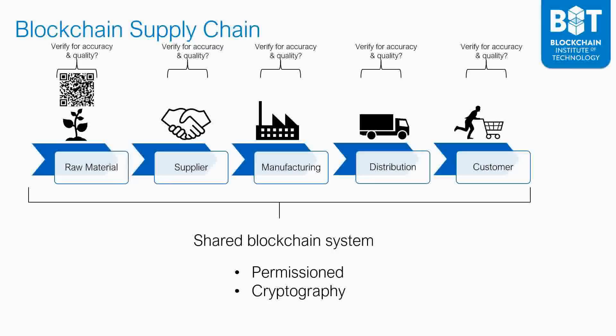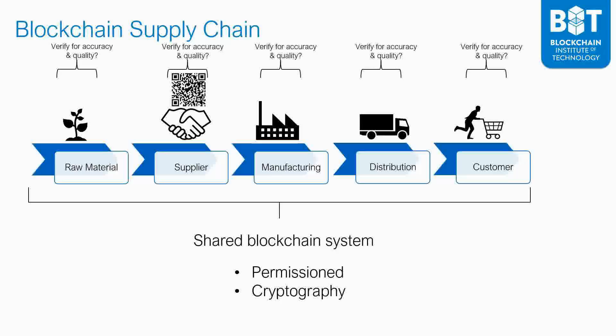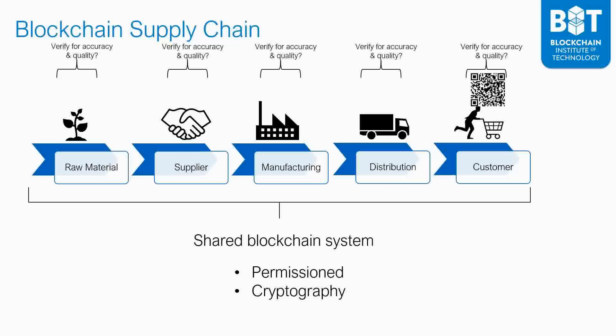These blockchain oracles take care of verifying and checking quality assurance of products as they make their way through the entire supply chain, issuing triggers that advance the next step in the workflow. When the product finally reaches the customer, because all this information has been captured securely on a blockchain, the customer can access the entire provenance history of that product by simply scanning a barcode or QR code.